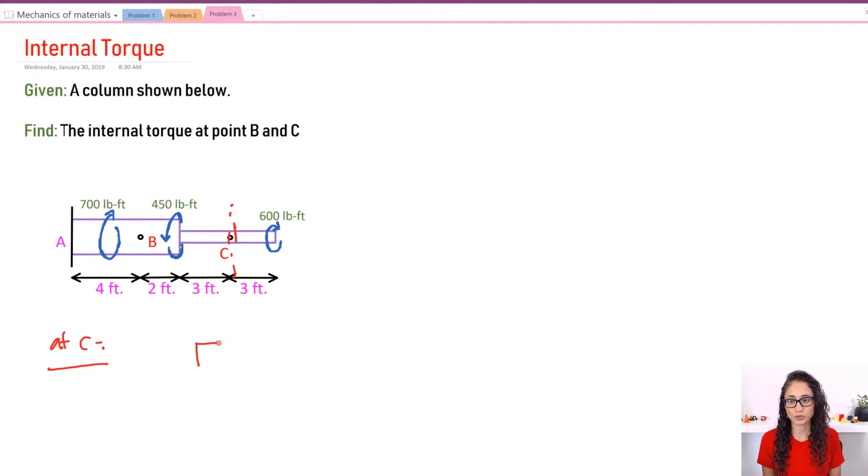So I'm also going to actually draw it. Let's say this is point C right here, and then I have 600 pounds per foot this way. Now if I want to know the torque here at C, for me to reach equilibrium at that segment I'm going to need another 600 pounds-foot torque but the opposite direction.